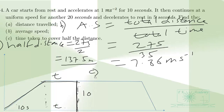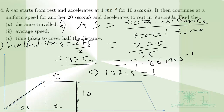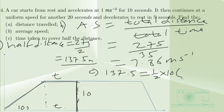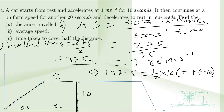Setting up the equation: the area of this trapezium equals 137.5 meters, which is equal to one-half times the height of 10, times the sum of the bases (t plus 10). We solve this equation for t, then add it to 10 seconds to find the total time to cover half the distance.